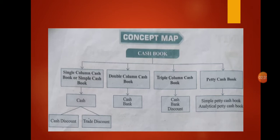First, cash discount. Cash discount is allowed to parties making prompt or immediate payment. It is discount allowed — that is a loss for the creditor — and discount received. The discount is allowed when payment is received or made, and hence the entry for discount is also passed with the entry of payment. This is known as cash discount.